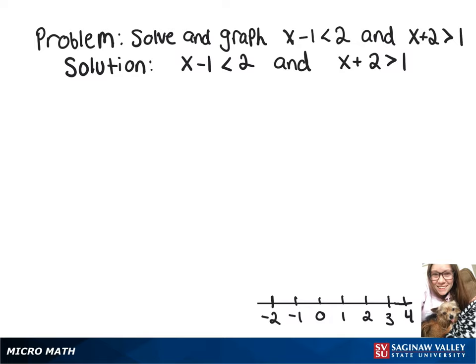So let's take these one at a time. Starting over here, we'll add 1 to each side. And that's going to give us x is less than 3.